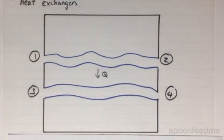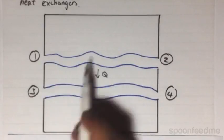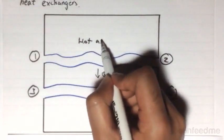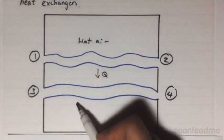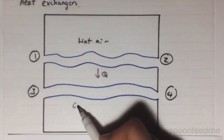So for argument's sake, let us assume that pipe 1-2 here contains hot air, and pipe 3-4 here contains cool water.